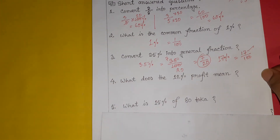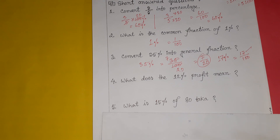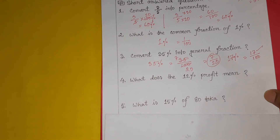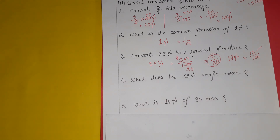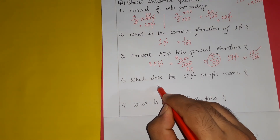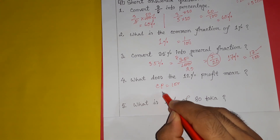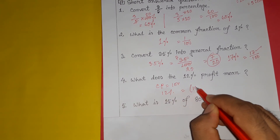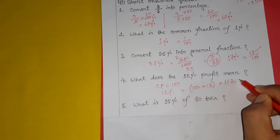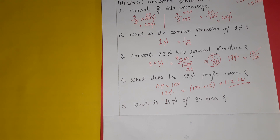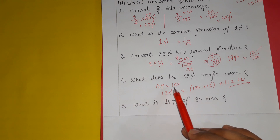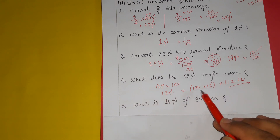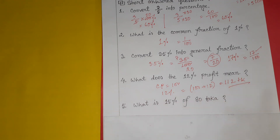Question number 4: what does 12% profit mean? Profit means the sale price exceeds the cost price. So 12% profit means that if the cost price of a product is 100, then at 12% profit the sale price will be 100 plus 12, which equals 112.